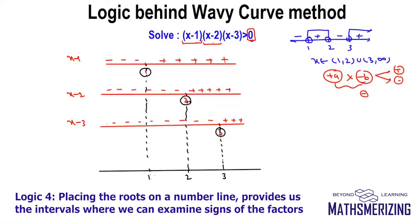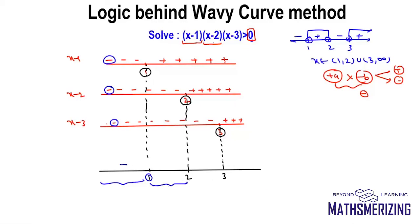When x is less than 1, the first expression is negative, the second is also negative, and the third is also negative — so minus times minus times minus is minus. Between 1 and 2, the first expression is positive, second is negative, third is negative — plus times minus times minus is plus. Between 2 and 3, first is positive, second is positive, third is negative — plus times plus times minus is minus. When x is greater than 3, all three expressions are positive, so the rightmost value is plus.